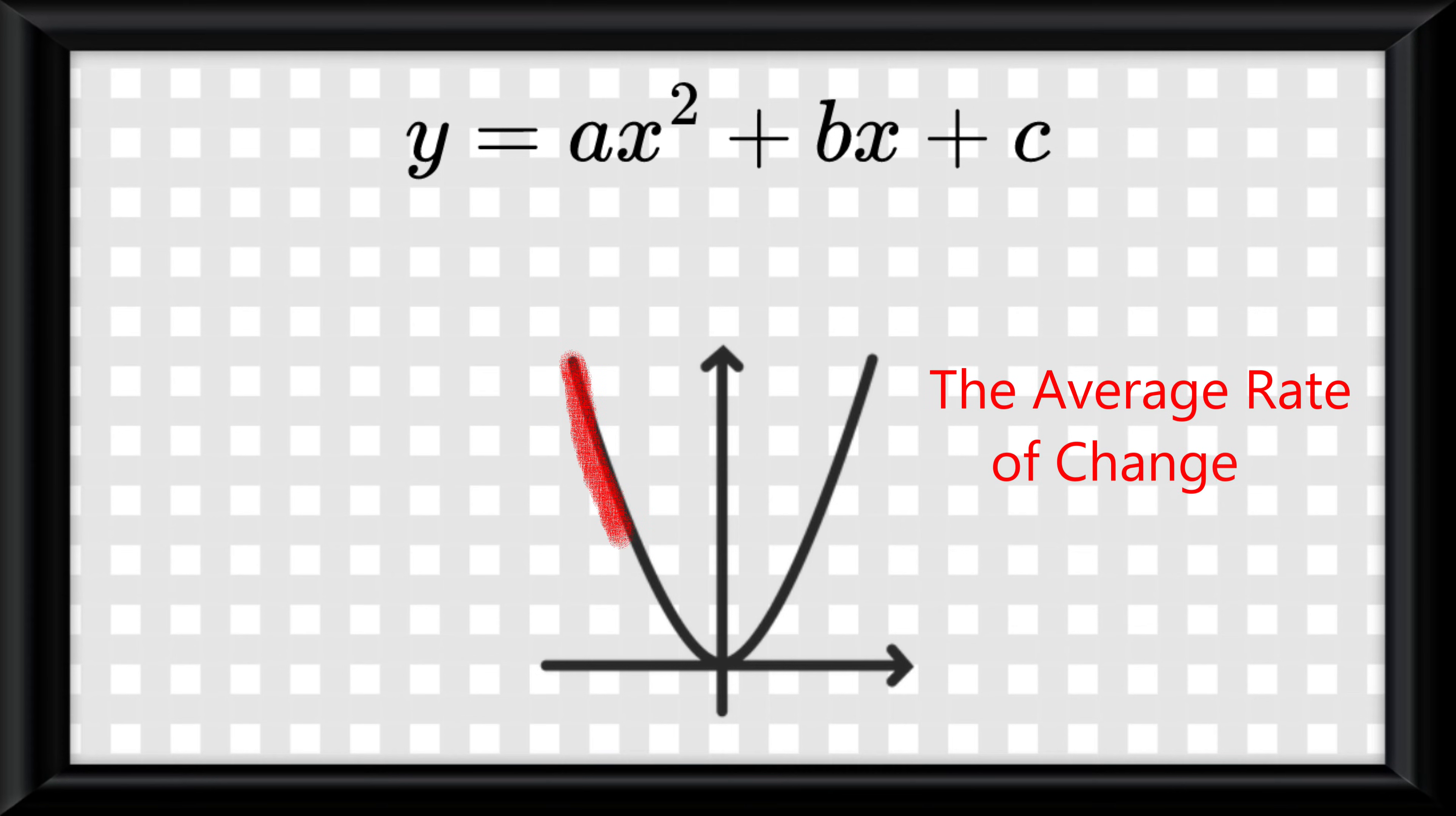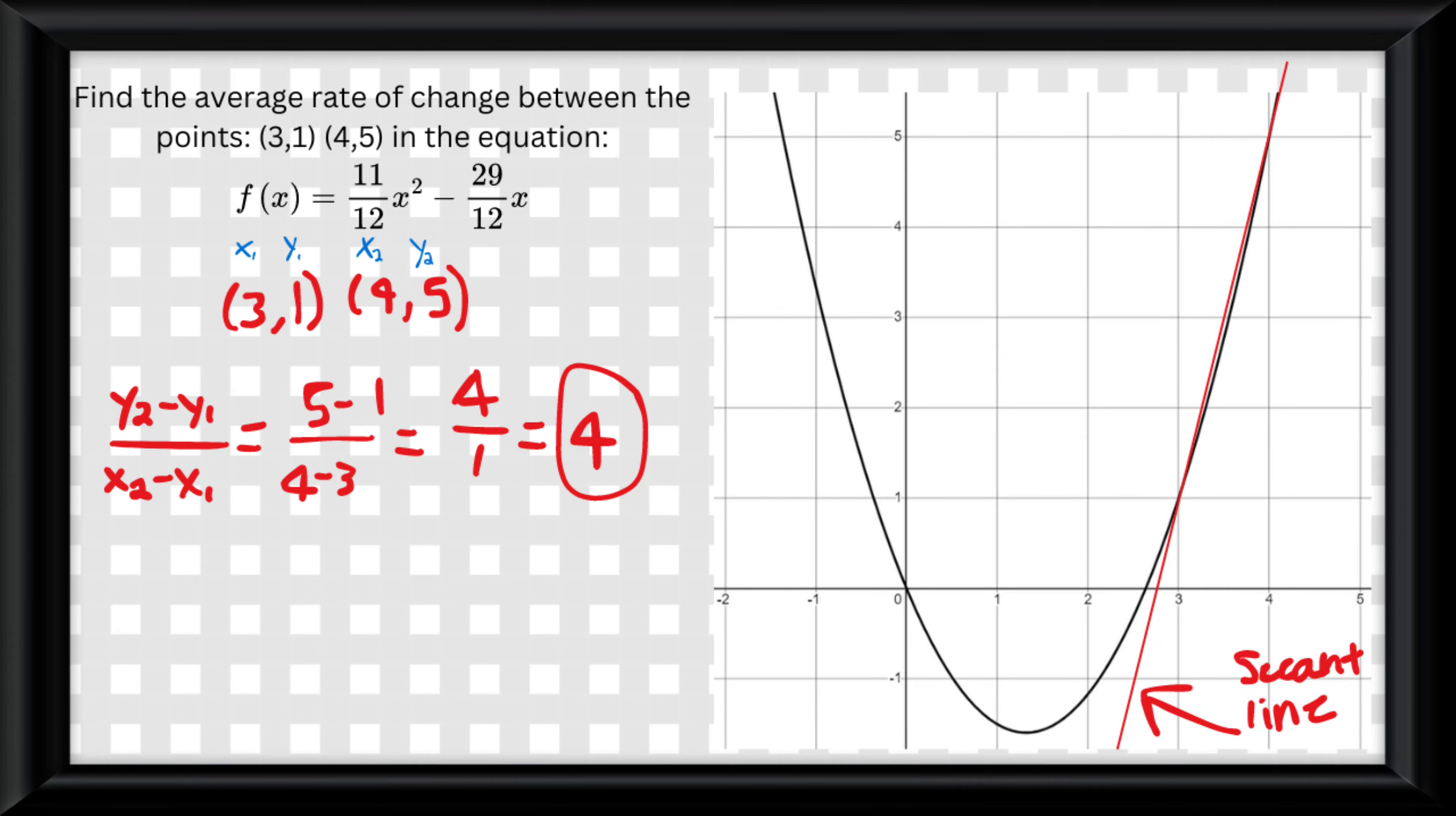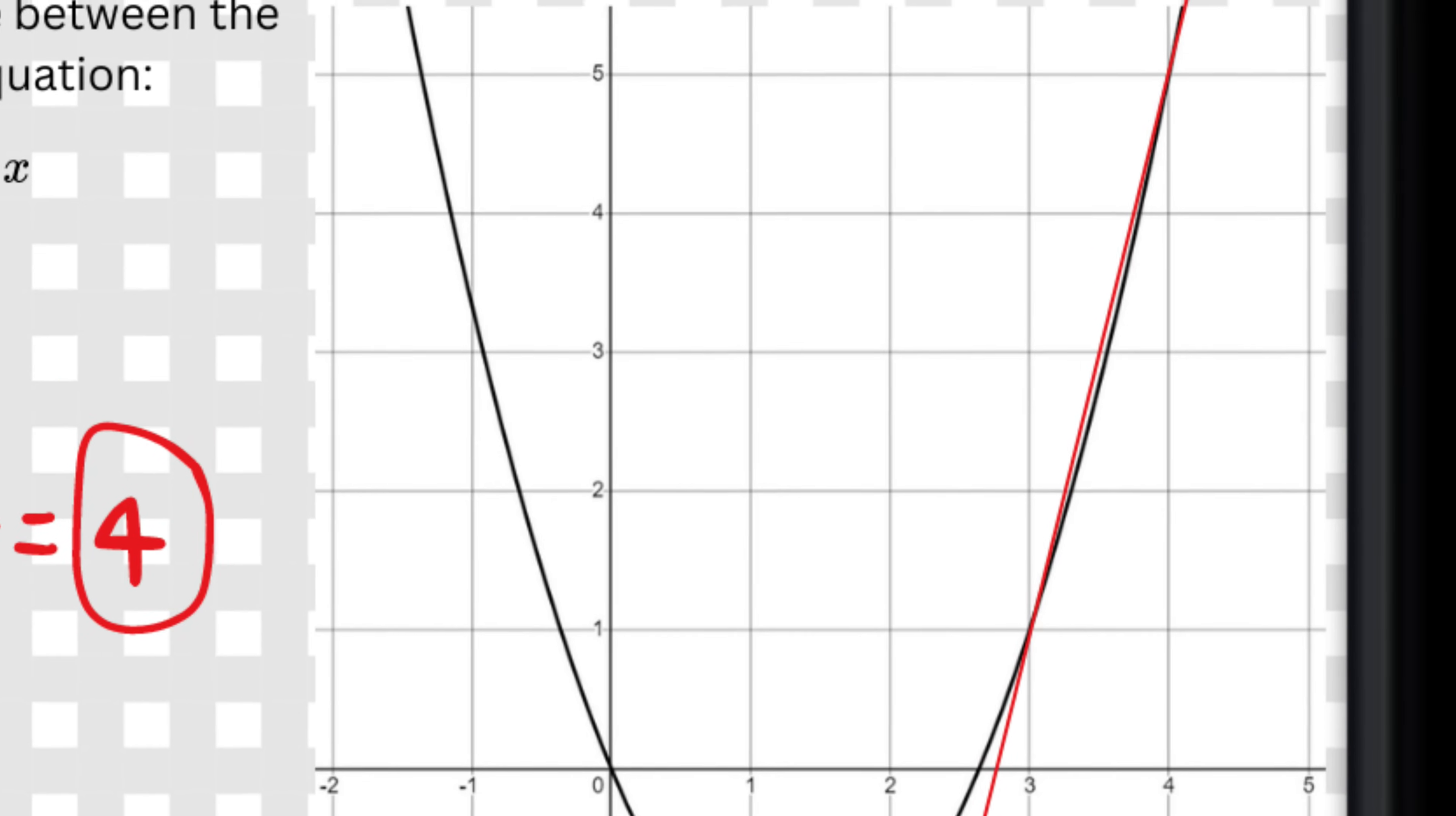in quadratic functions, the average rate of change is changing at a linear rate. With quadratic functions, if you find the average rate of change over any interval, you'll simply be calculating the slope of the secant line created in that interval. This means the rate of change will never be accurate to the actual quadratic function.